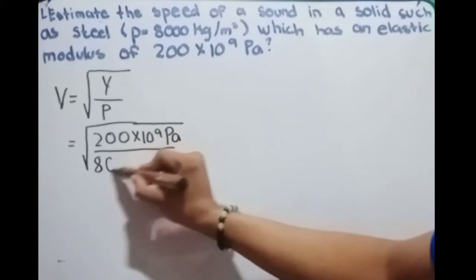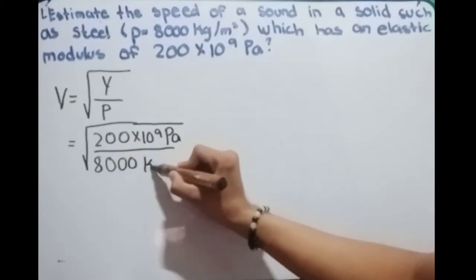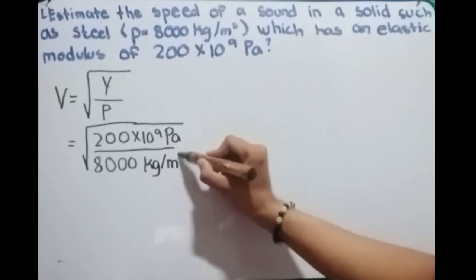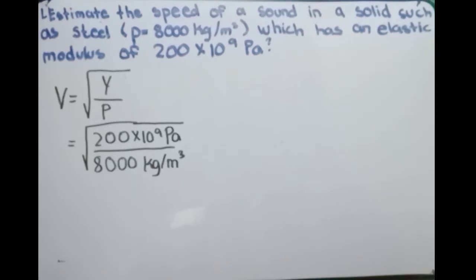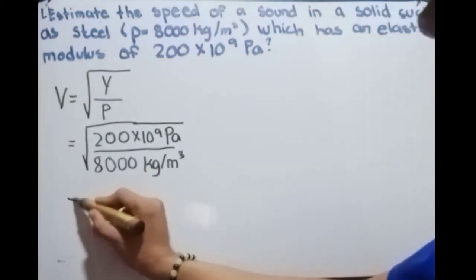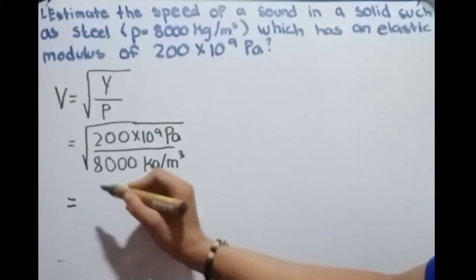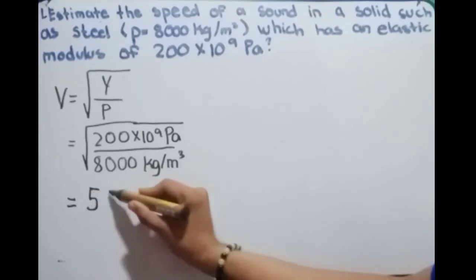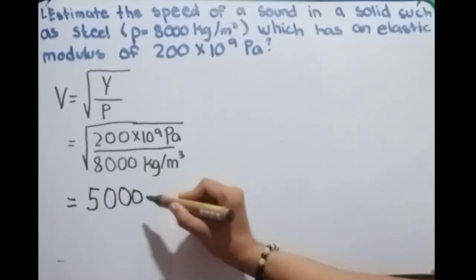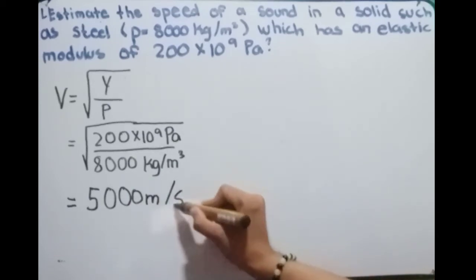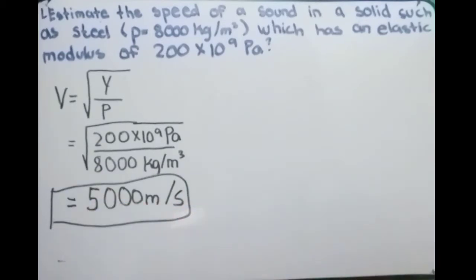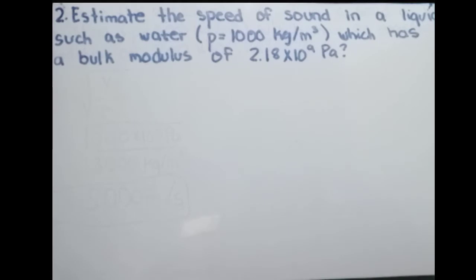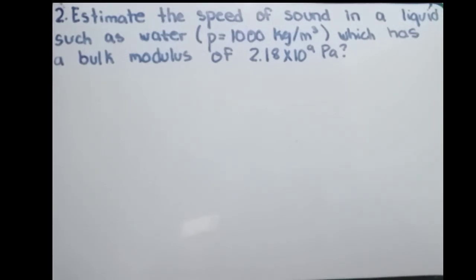So we compute 200 times 10 raised to 9 divided by 8000 and take the square root. We get the speed of sound in steel, which is 5000 meters per second. That's a bigger number. Now let's compute the speed of sound in liquid.